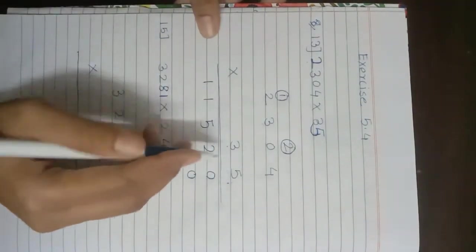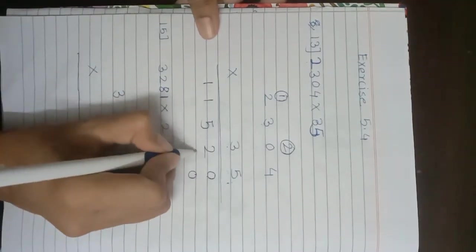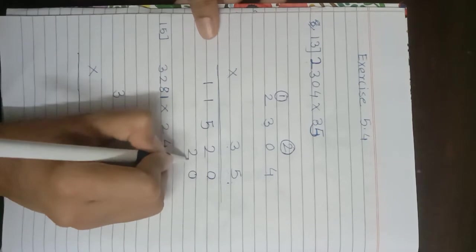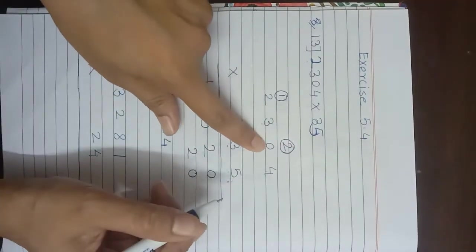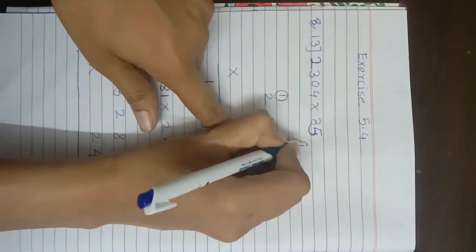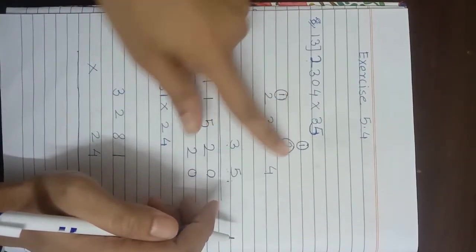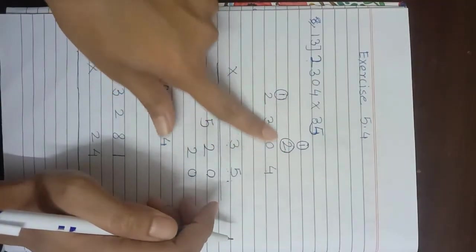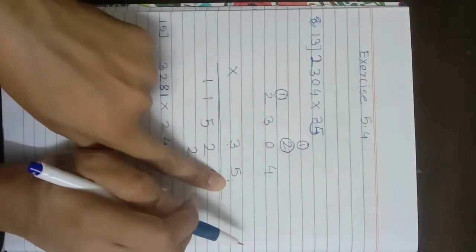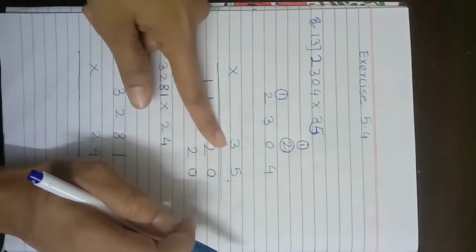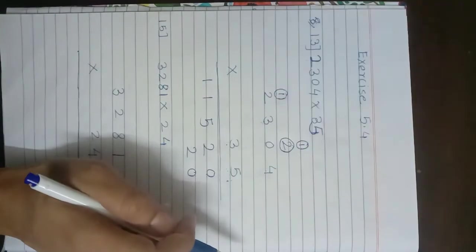4 multiplied by 3 is 12. We write 2 under the tens place column and carry 1. The carry from multiplying by the ones digit is written in the first row; the carry from multiplying by the tens digit is written in the second row — so we always know which carry to add.